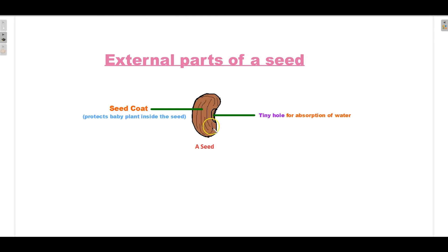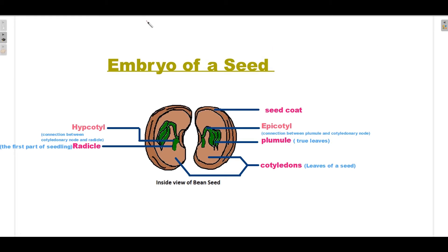The seed has a tiny hole which helps it absorb water and also respire. Next, embryo of a seed. A seed can be divided into two halves. These halves are called cotyledons, which are also called leaves of a seed.